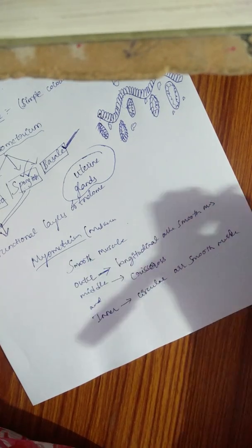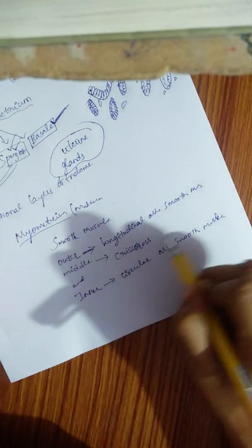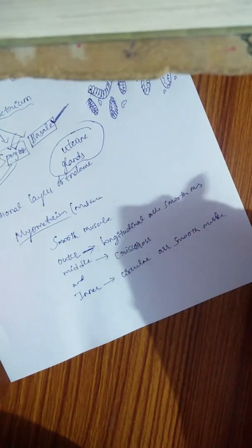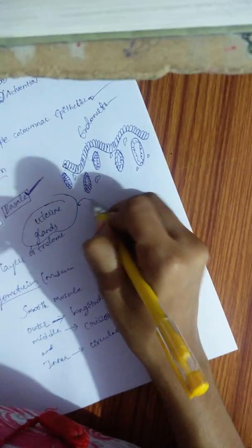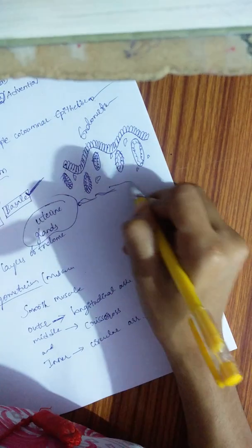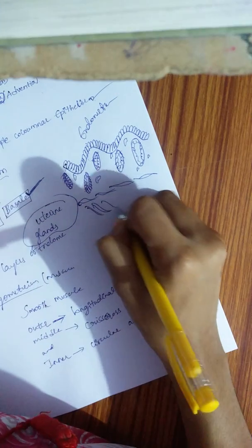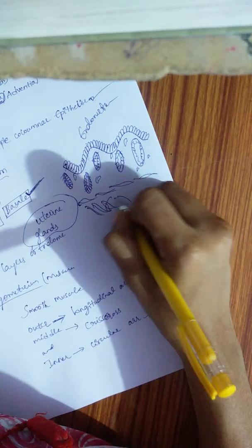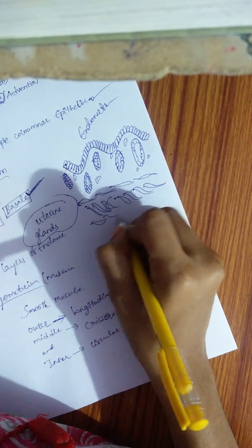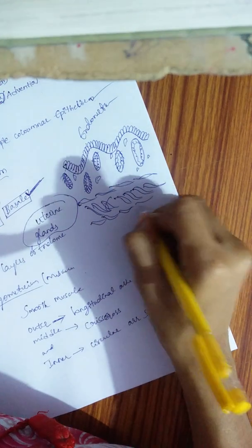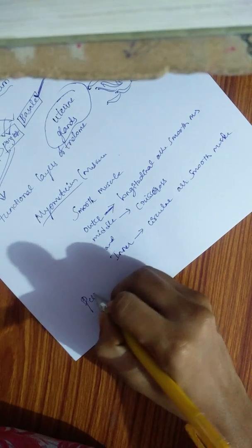In the diagram you can see the smooth muscles: the longitudinal arrangement, then the crisscross arrangement, and then the circular arrangement of smooth muscles. These constitute the myometrium layer.